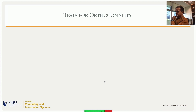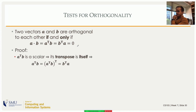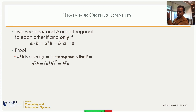For the test of orthogonality of two vectors, the dot product must equal zero. This is not a definition per se — it is a consequence that we can prove from more fundamental principles. First, we know that a dot b, or a-transpose b, is a scalar. By definition, the transpose of a scalar is itself, since a scalar is a 1-by-1 symmetric matrix. Therefore, a-transpose b equals (a-transpose b) transposed, which equals b-transpose a.